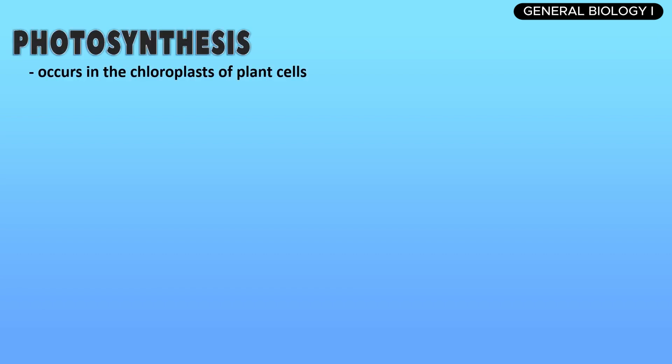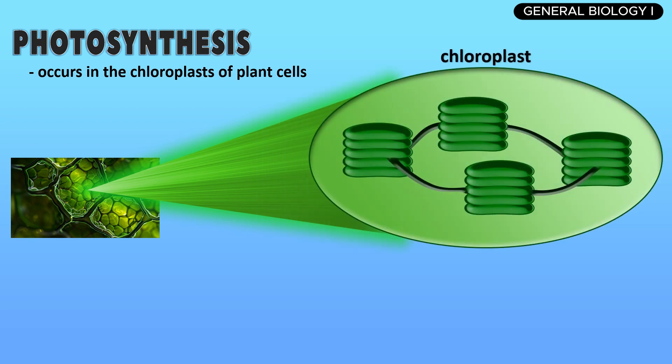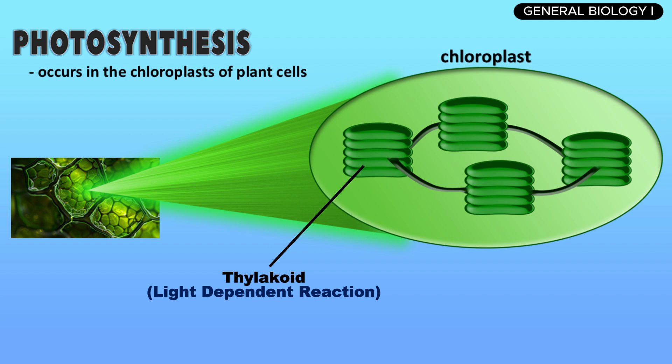Photosynthesis occurs in the chloroplasts of plant cells, primarily within the leaves. It's divided into two major phases: the light-dependent reactions, which take place in the thylakoid membranes of the chloroplast, and the light-independent reactions, which occur in the stroma of the chloroplast. Together, these phases convert sunlight, water, and carbon dioxide into glucose and oxygen. Now, let's break down each phase starting with the light-dependent reactions.